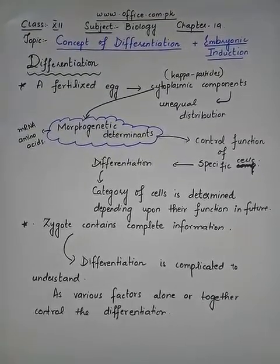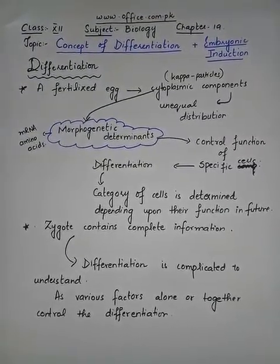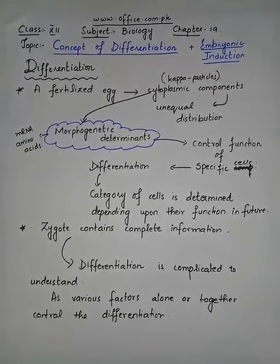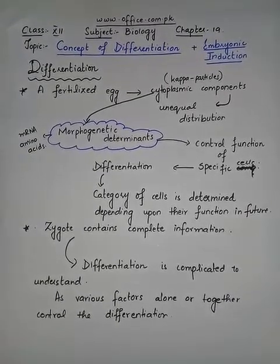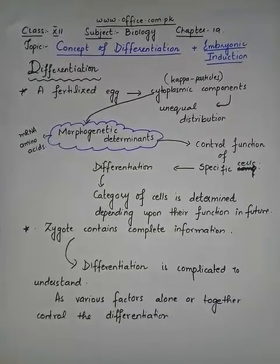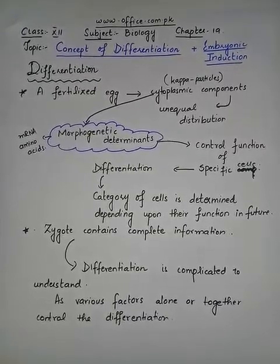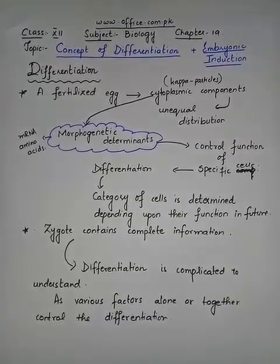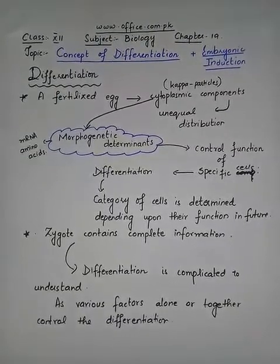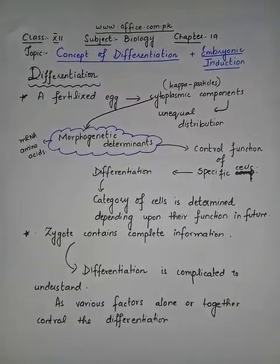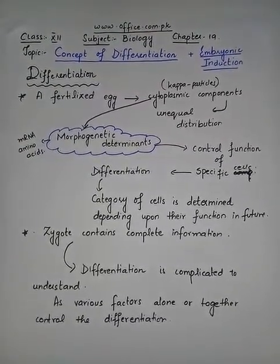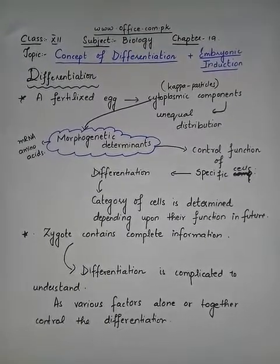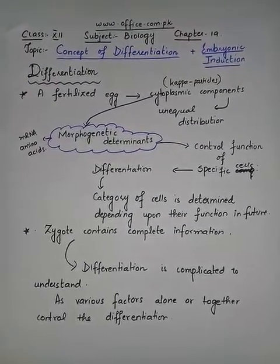Various factors, alone or all together, control the differentiation, and this is also known as embryonic induction — meaning certain layers control the growth of other layers and stimulate those other layers to form different organs.